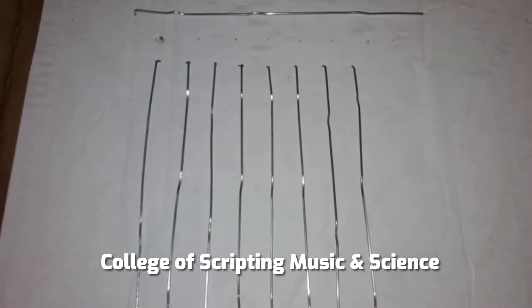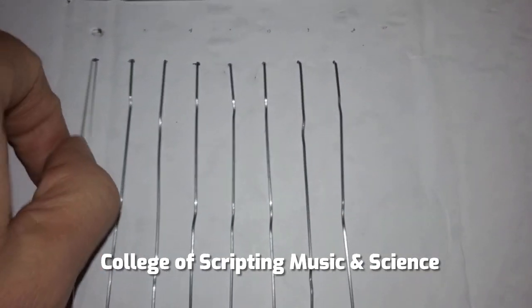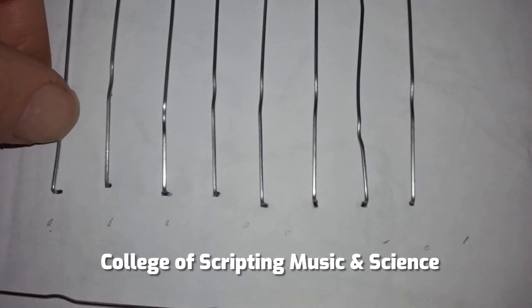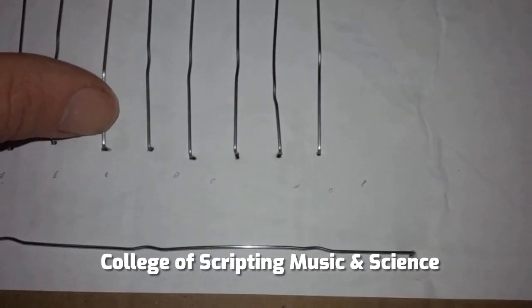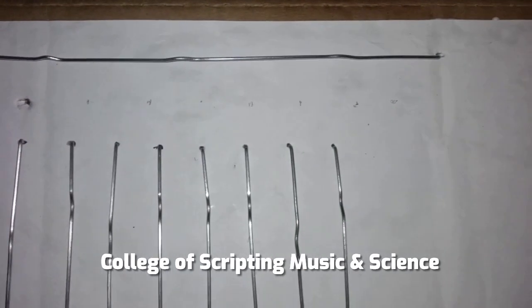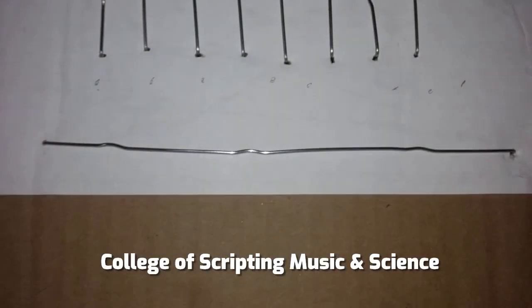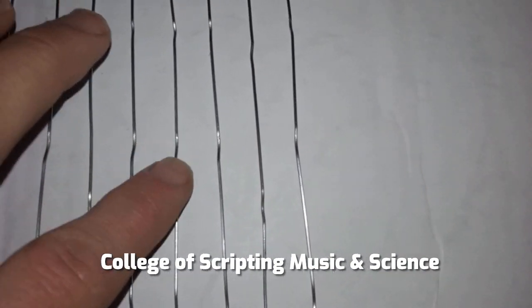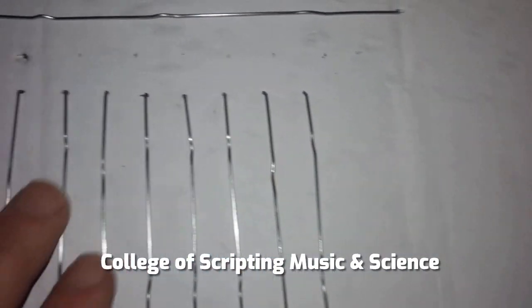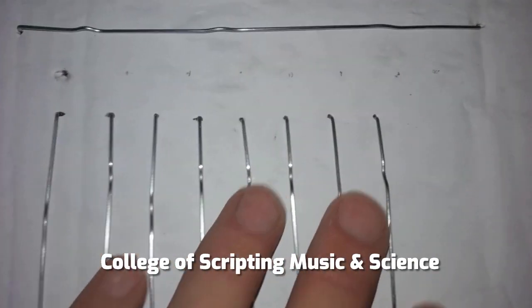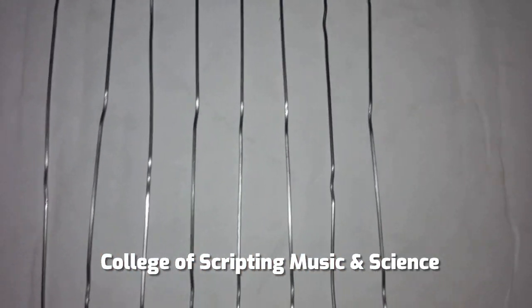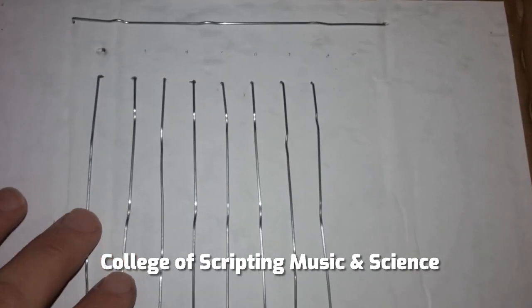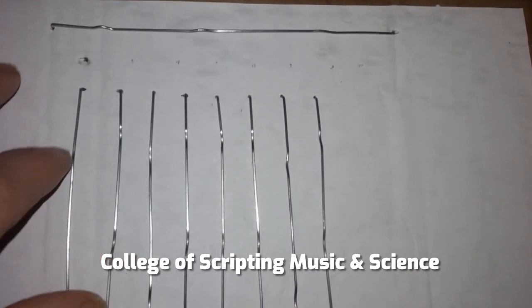All right, so now with all of our pieces in place, they're just held in there with a very small amount of a bend in the ends. We got our positive rail, we got our negative rail, we got eight rows.